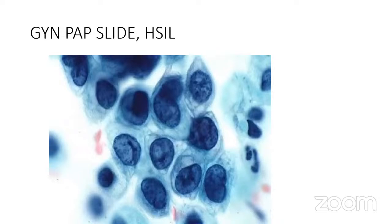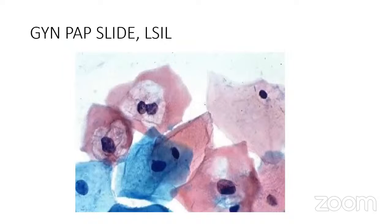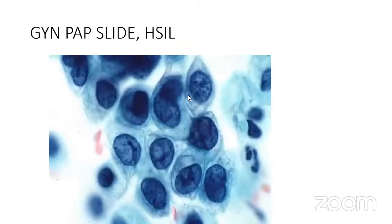For high-grade squamous intraepithelial lesions, the cell size resembles parabasal cells rather than the superficial/intermediate cells of LSIL. The nucleus-to-cytoplasmic ratio is much greater, and the chromatin is irregularly clumped with possible nuclear membrane irregularities. This would be classified as HSIL.